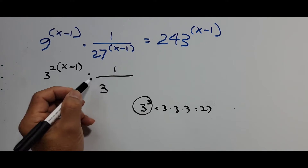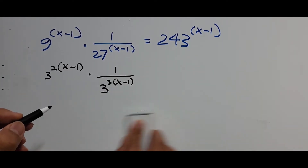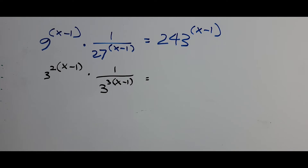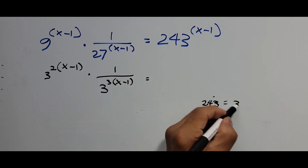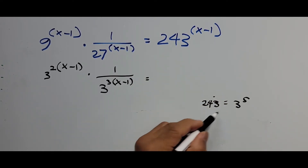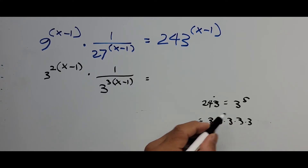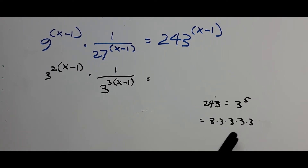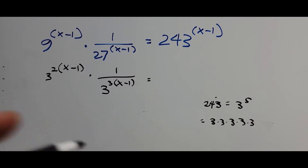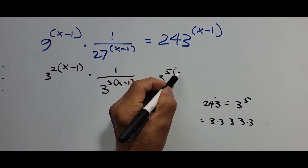So over here, 243 can be written as 3 raised to the fifth power, multiplied by the exponent x minus 1.